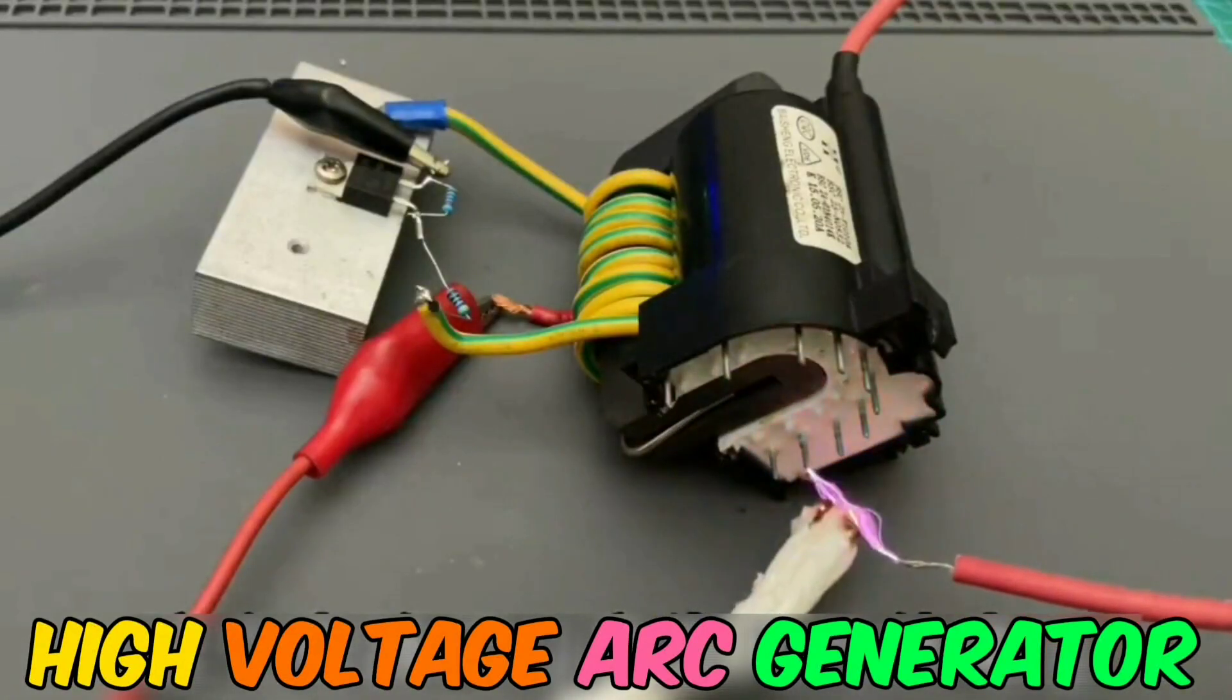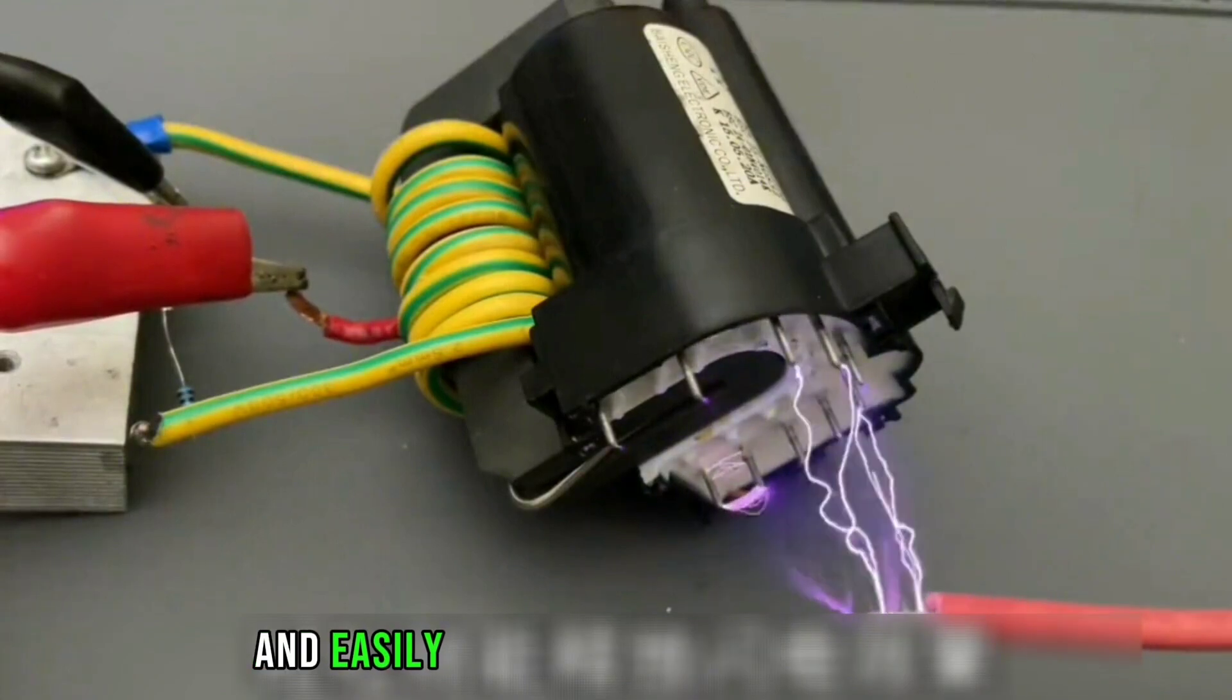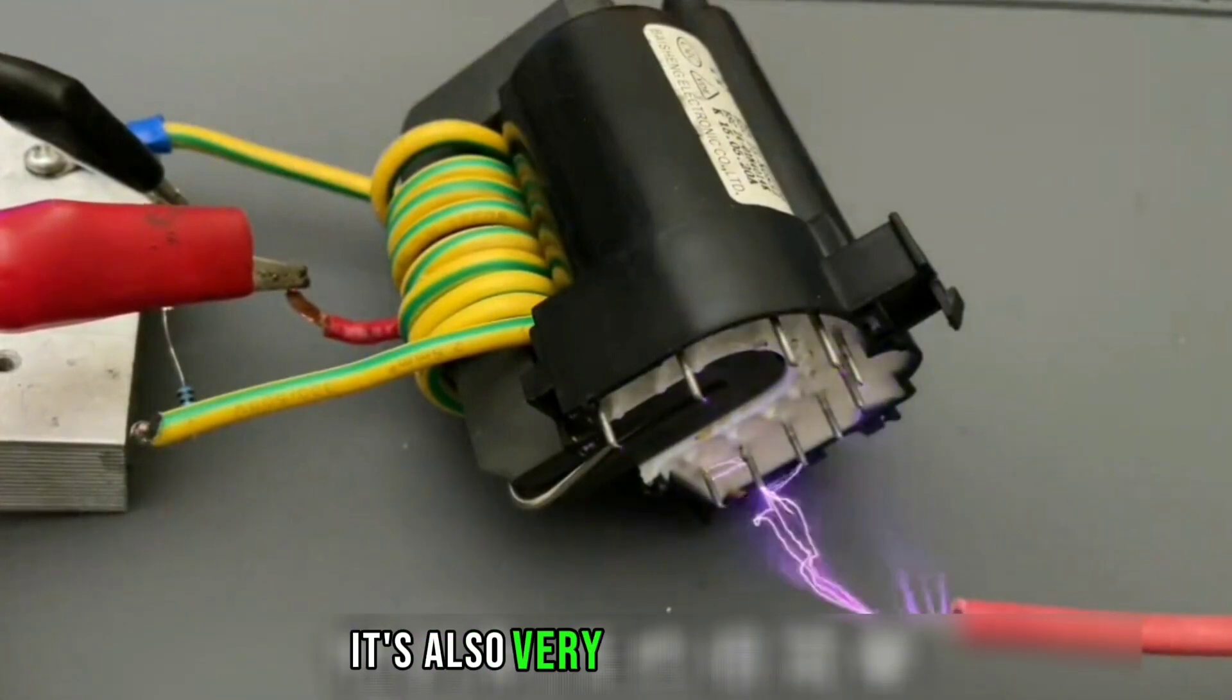High-voltage arc generator. This circuit can generate up to 10,000 volts, easily releasing a lightning effect. It's also very simple to make.